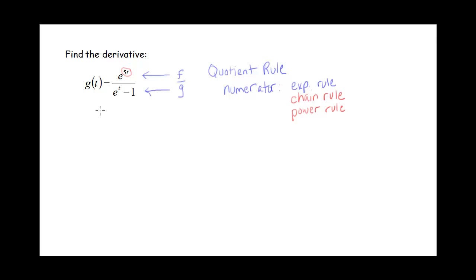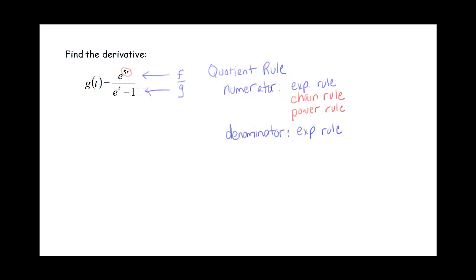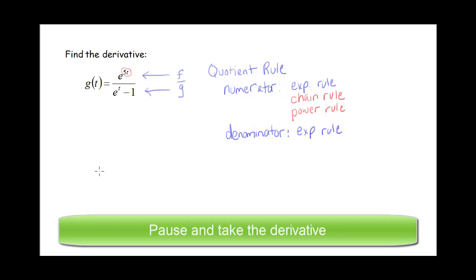Now let's look at the denominator. When I look at this, I'm noticing that I've got two terms. This first term, I just use that exponential rule. And in the second term, that's just a constant, so I would use the constant rule. I don't need to use the chain rule at all when I'm doing the derivative of my denominator. So I want you to pause the video now and give the derivative a try.